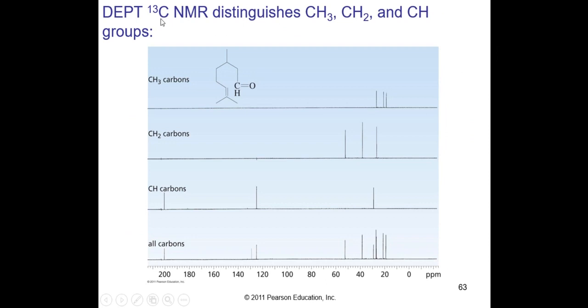Now this is called DEPT C-13 NMR, and it distinguishes methyl, methylene, and methine groups. That looks like citronellal aldehyde, and you can see CH3, CH2, CH, and then all carbons proton decoupled. This is going to be very big with natural product structure determination. You have a complex structure and you begin to apply these NMR techniques.